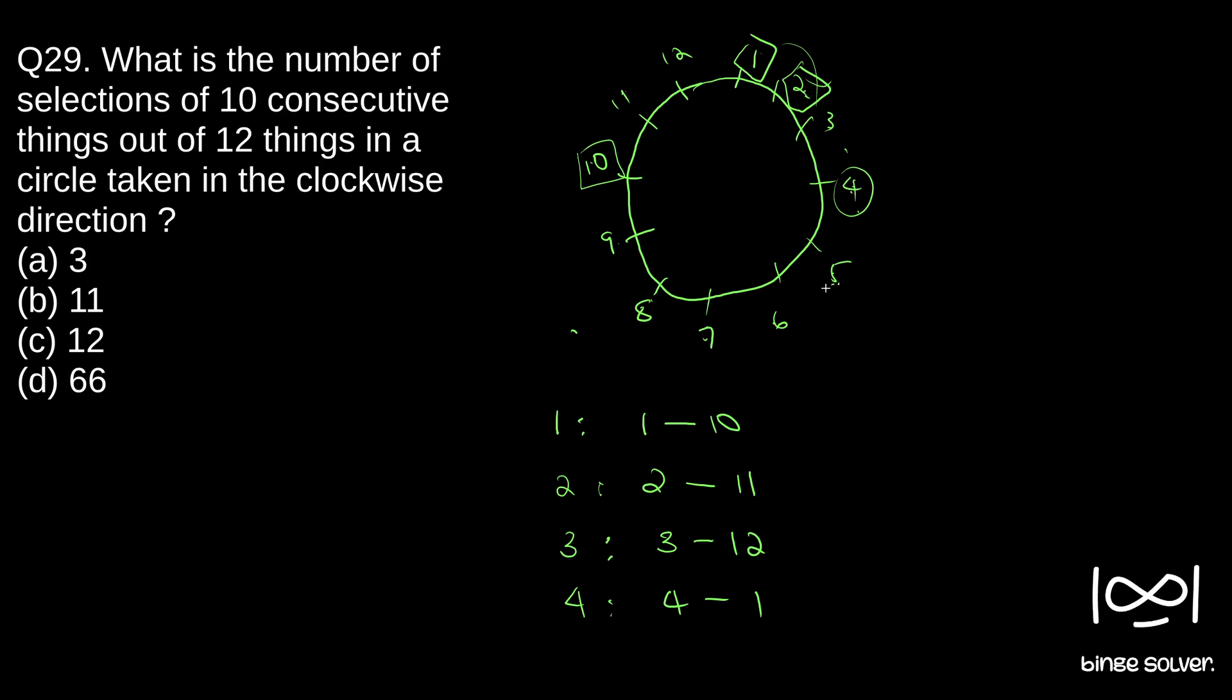So we will end with 1. Similarly, how many unique selections we can make? It depends on the number of possibilities we can begin with. So which is 12 cases. So we will have such 12 cases.